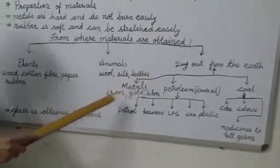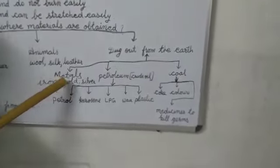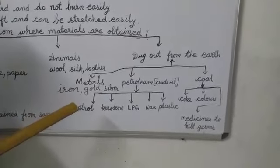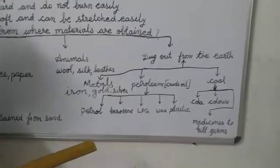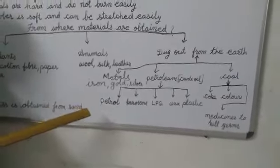The materials that are dug out from the earth are metals. So, metals are present in minerals. In last chapter, rocks and soil, the explanation of mineral is given.